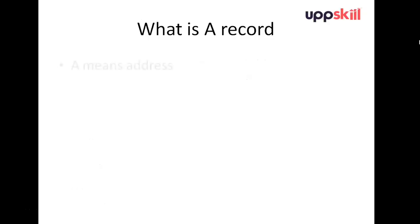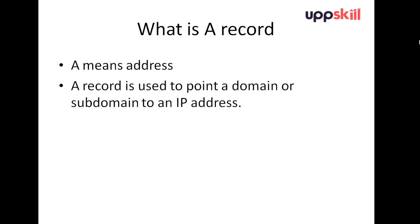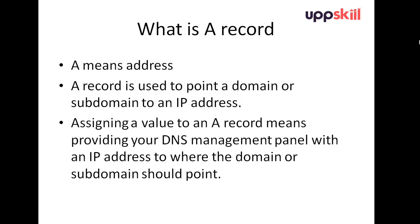What is an A record? A stands for address. An A record is used to point a domain or subdomain to an IP address. Assigning a value to an A record means providing your DNS management panel with an IP address to where the domain or subdomain should point.